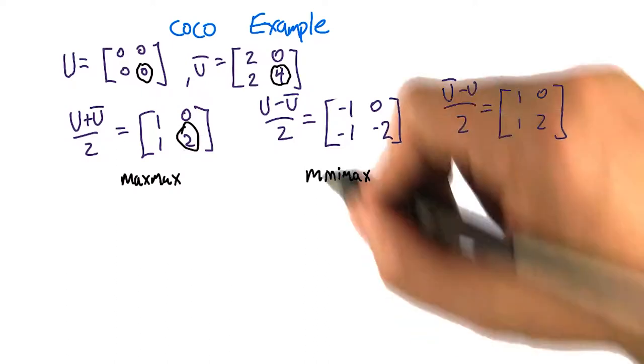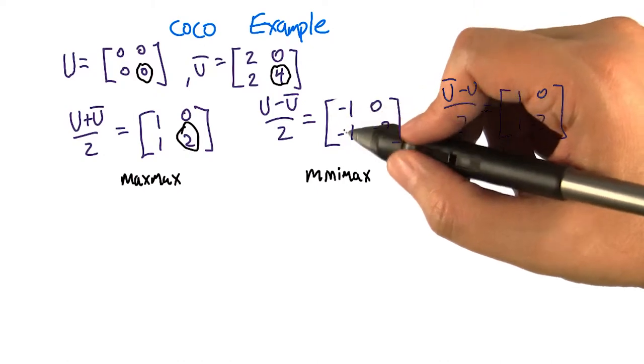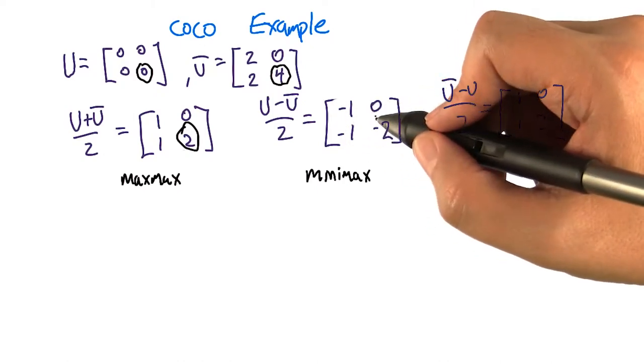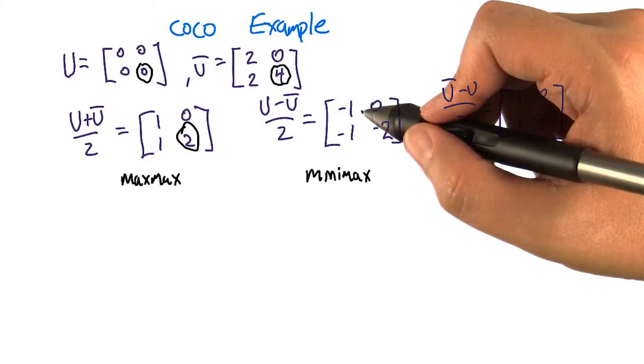So the minimax value, so what's the score that the row player, the U player, the maximum score that it could get for itself? Minus one. You get a minus one. So how does it do that?